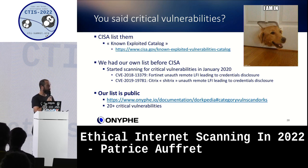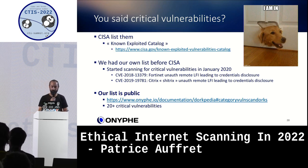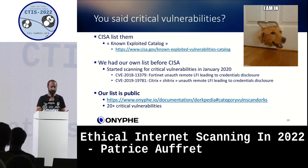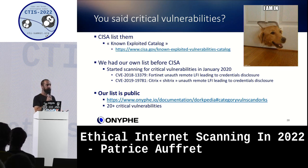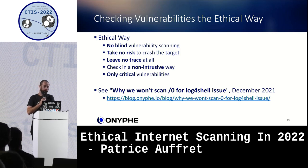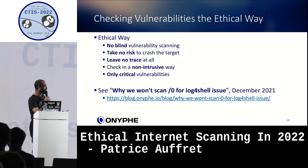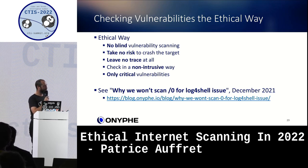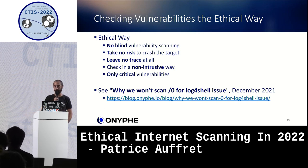At that time we scanned two critical vulnerabilities: one on Fortinet devices and one on Citrix gateways — and there are still some vulnerable devices exposed on the internet today. It raises the question of how they haven't been found yet. Today we scan more than 20 critical vulnerabilities at internet scale, and our list is public. The key question is: how do you check for vulnerabilities the ethical way? At a minimum, there are five rules.